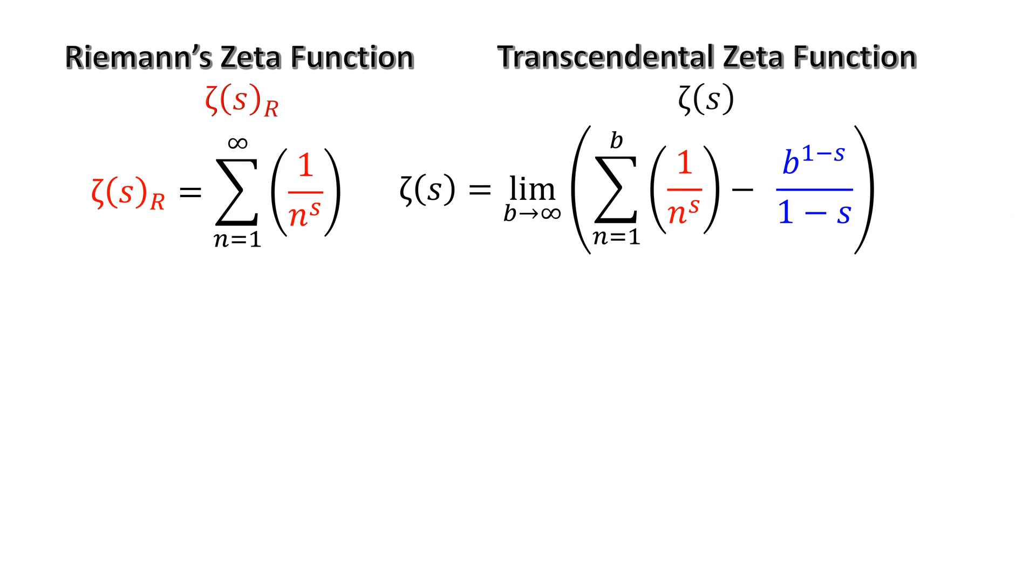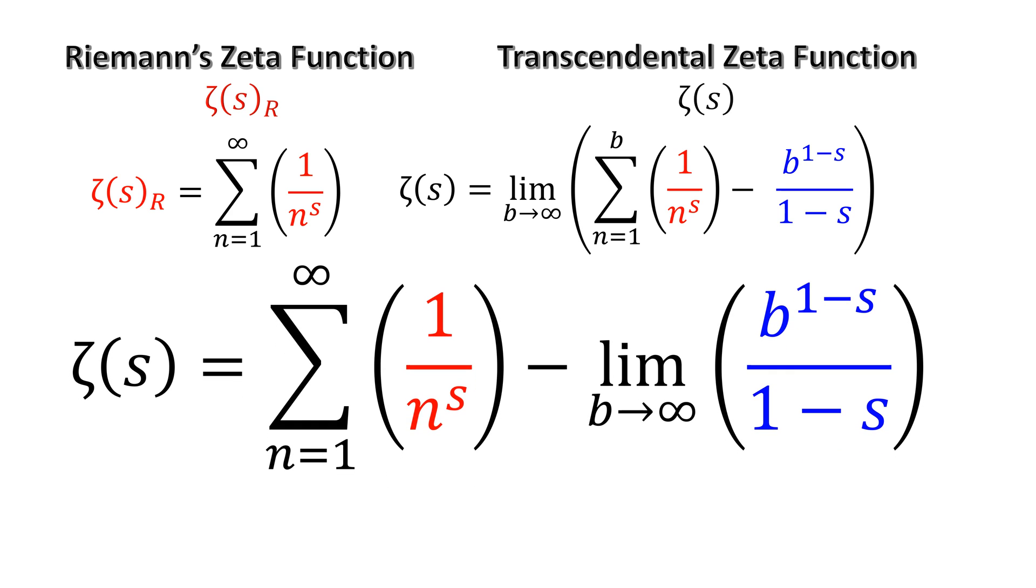Let's show Riemann's zeta function as ζ(s)_R and call it zeta_R. Notice the location of 1/n^s in this zeta function.